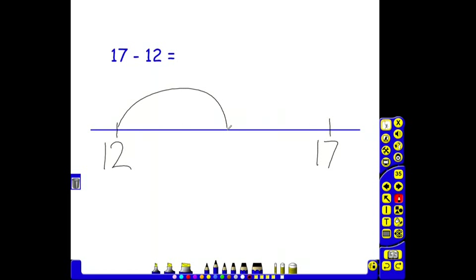Other children might think, I can jump to 15, so I can add on 3 to get me to 15, and I can jump another 2 to get to 17. If I add those two jumps together, I get 5, because we are looking for the difference.